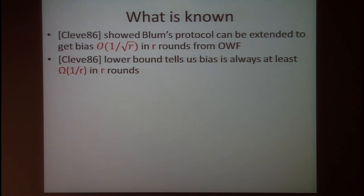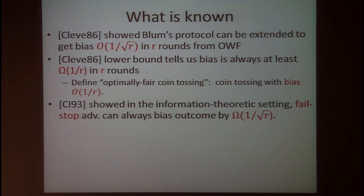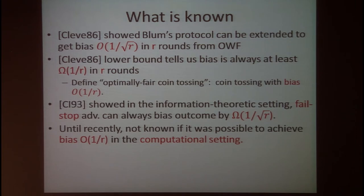Cleve also proved a lower bound: for any coin tossing protocol, there is always an efficient strategy for either Alice or Bob to impose bias of at least one over r in r rounds. We define optimally fair coin tossing as achieving this optimal bias of one over r. Subsequently, Cleve and Impagliazzo showed that in the information-theoretic setting a fail-stop adversary can always bias the outcome by one over square root of r.